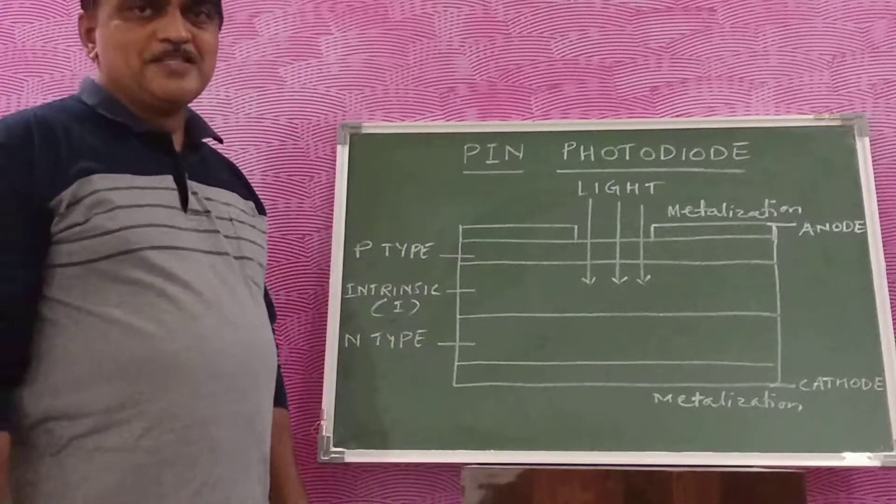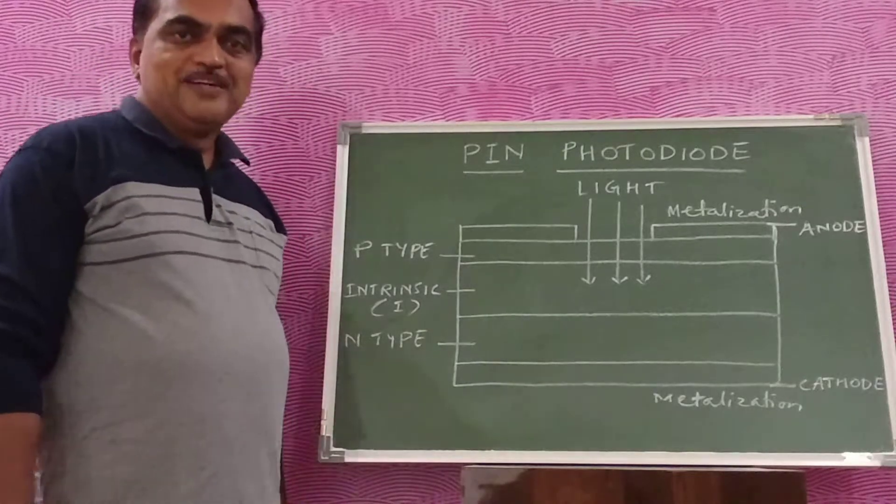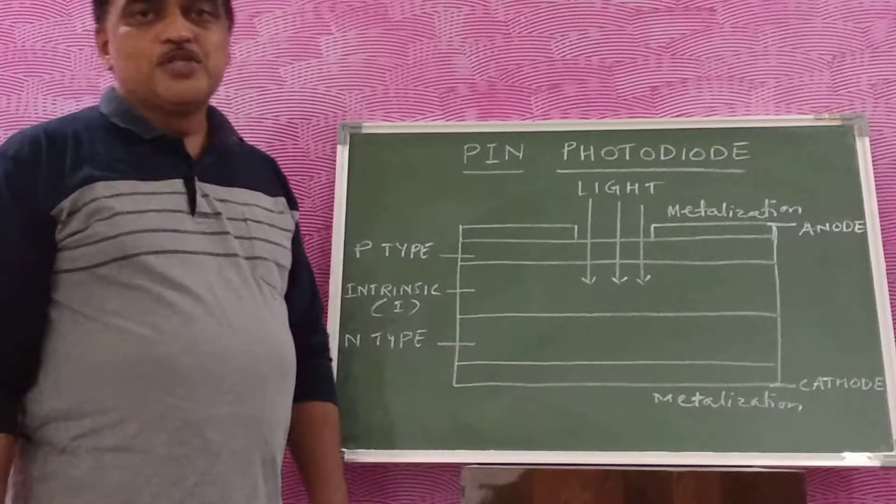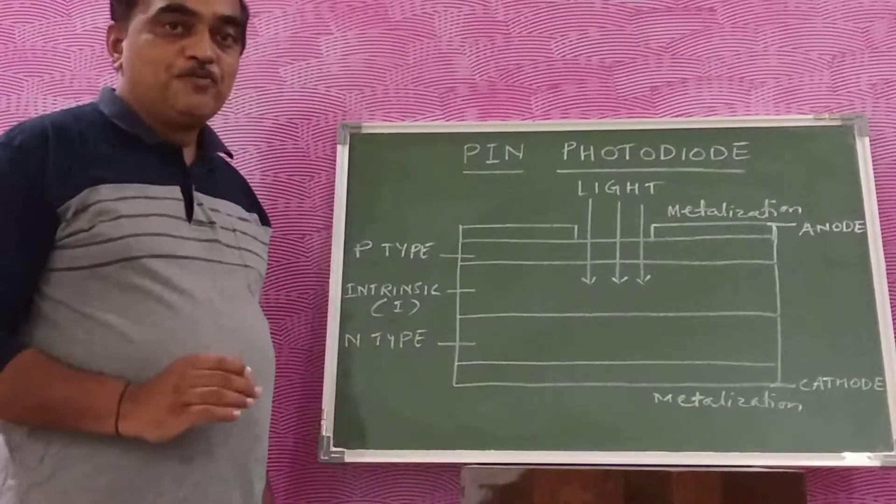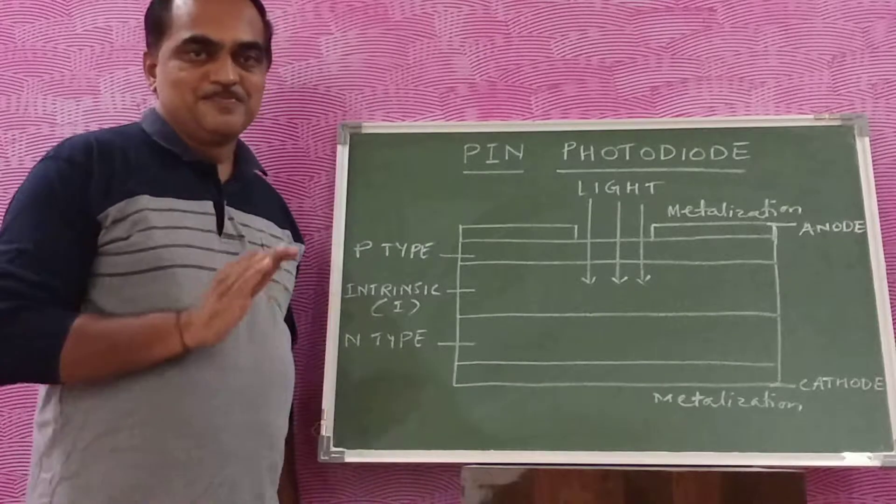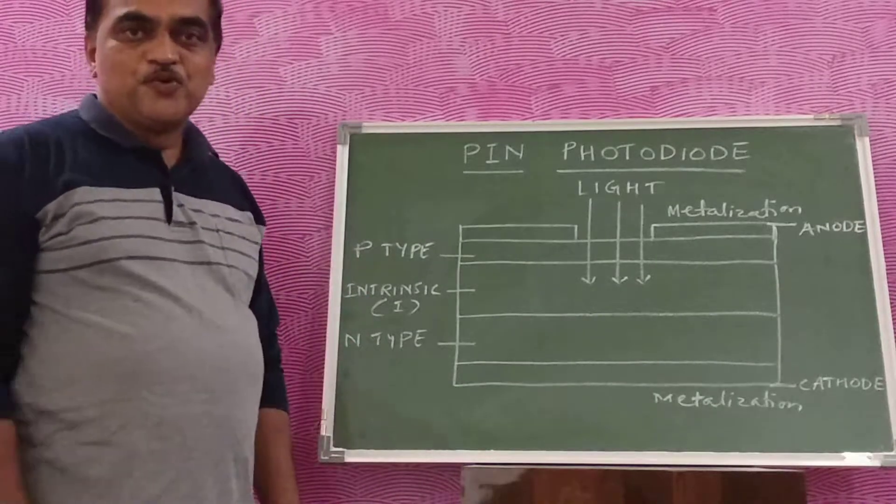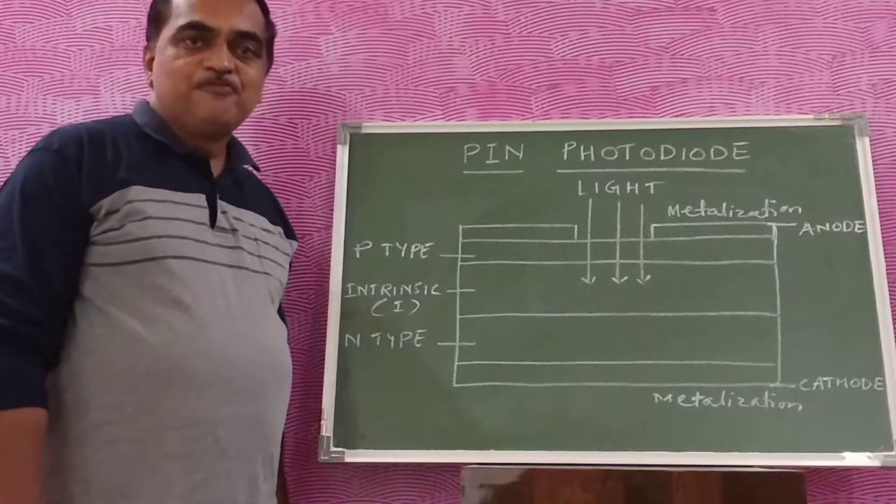Our dear students, today we will see one of the optical detectors which is used in the receiver part of an optical communication system. The first optical detector we are going to see is a PIN photodiode.